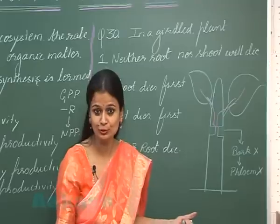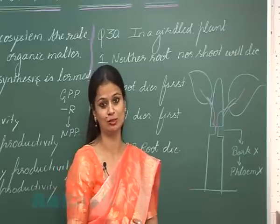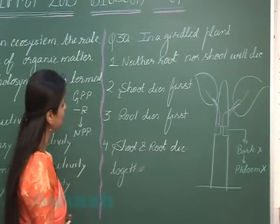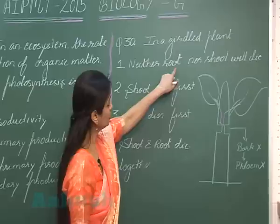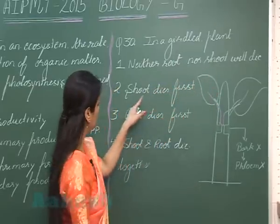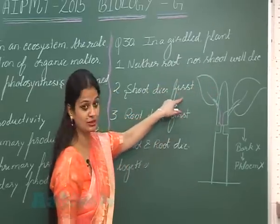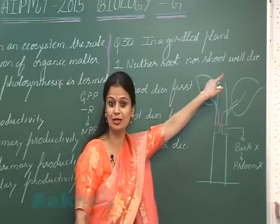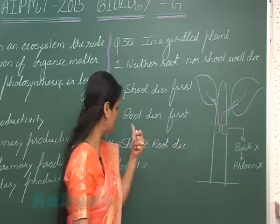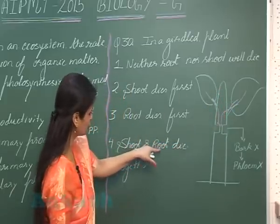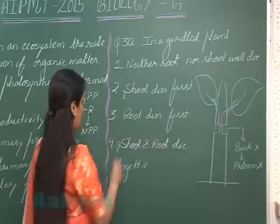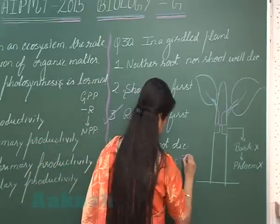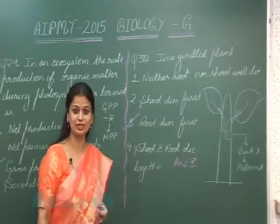Because food cannot reach the roots, the roots cannot survive, so the root is the first part to die. Following the death of the root, the shoot will ultimately also die. So the root dies first — not the shoot — and the correct answer is option number three.